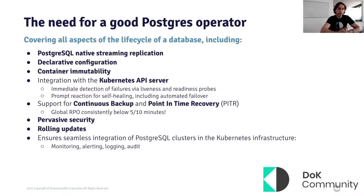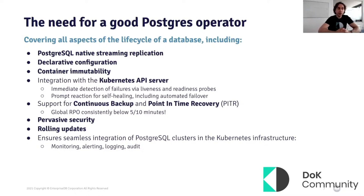Security must be pervasive, embodied in the operator and its development cycle — have you heard of shift left on security? That's what I'm talking about here. Security is also implemented through regular updates of both the operator image and the operand images, containing, for example, a new minor version of Postgres or updated container images with vulnerability fixes. A good PostgreSQL operator should implement rolling updates in an automated way by first replacing the container image in each replica one at a time, then issuing a switchover of the primary to the most aligned replica before realigning the former primary to the current one. Finally, each PostgreSQL cluster must be a good citizen in the Kubernetes cluster and the overall IT infrastructure, with solid troubleshooting processes and seamless integration of monitoring, logging, and audit.